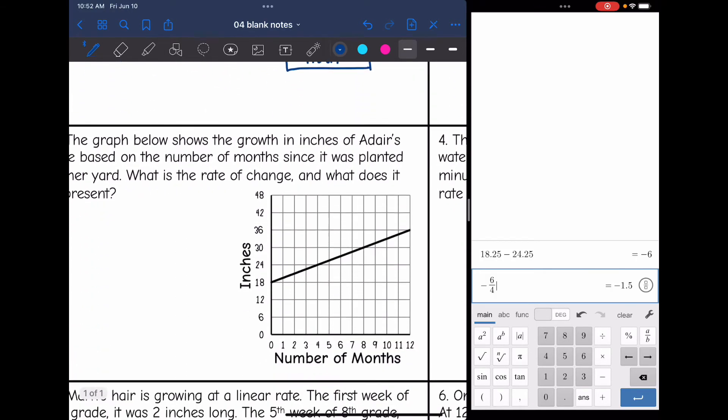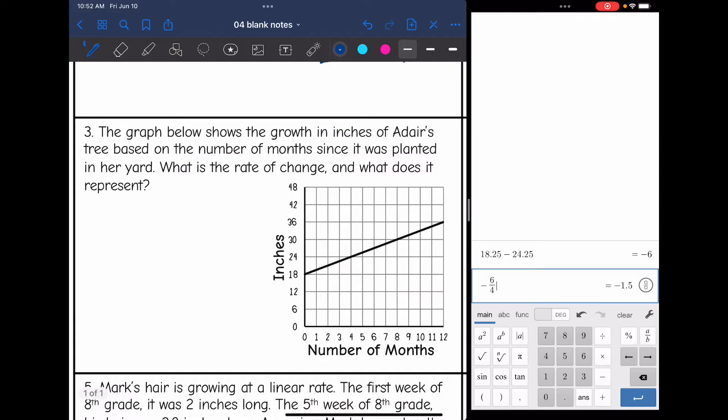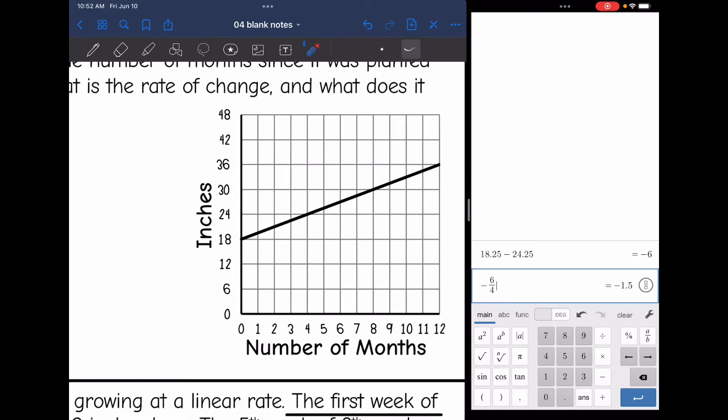Let's look at three. It says the graph below shows the growth in inches of Adair's tree based on the number of months since it was planted in her yard. What is the rate of change and what does it represent? So here's a graph showing as the months go on, her tree is growing in inches. So let's try to figure out how many inches her tree is growing. As for the rate of change, which is slope, so I'm going to find two perfect points.